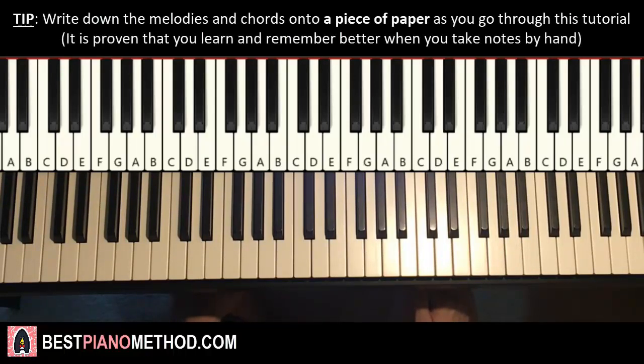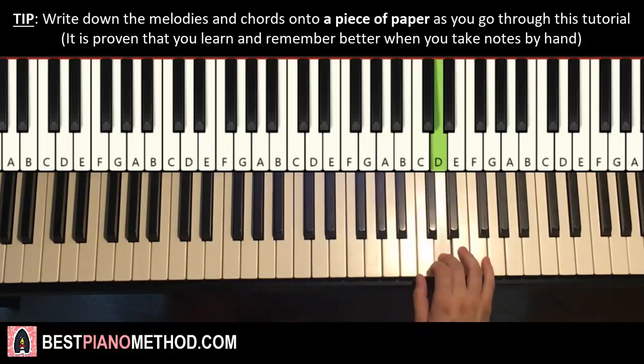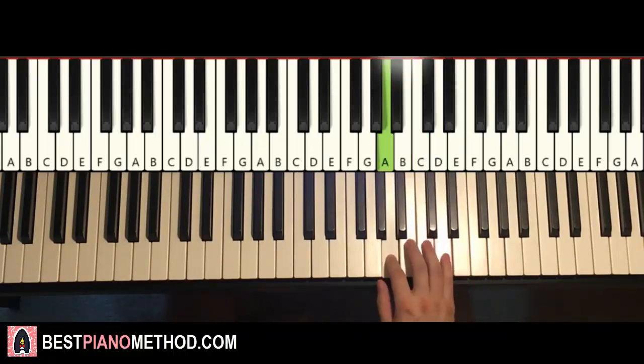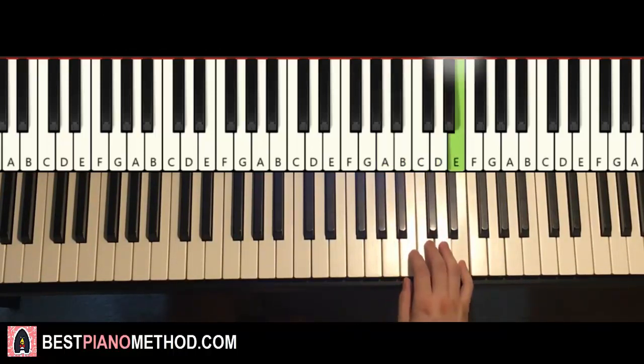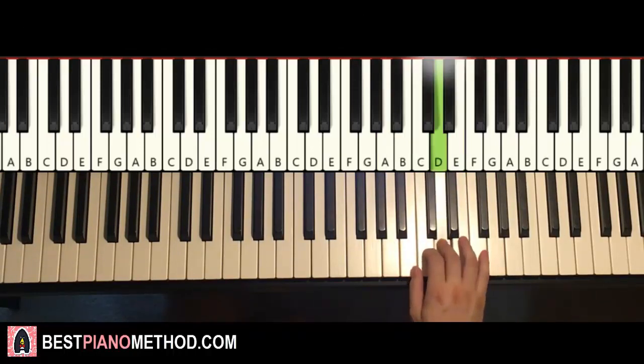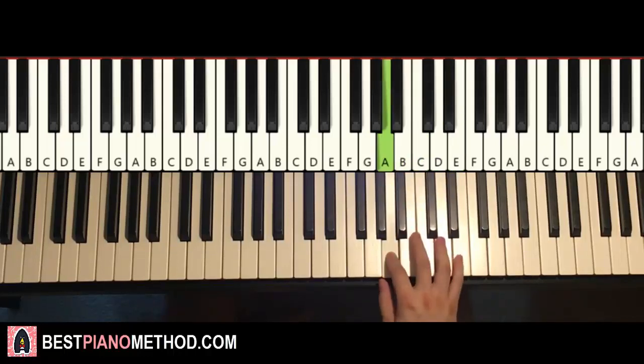So here we go, let me see, we'll break it up to four parts so it's easy to learn. First part starts from the C above middle C. To C D E C C B A, up to D C E E, C D C E. And that's the first part, one more time, it goes like this: C D E C C B A.